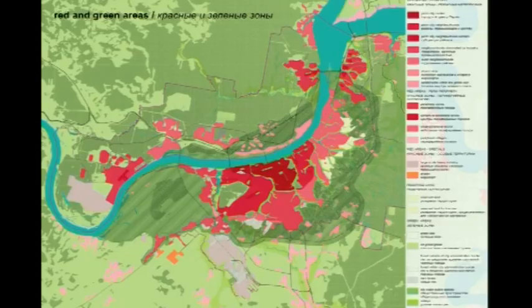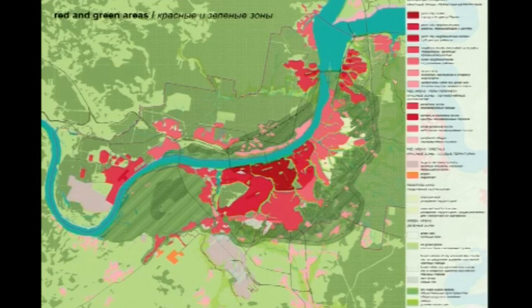What we developed is this kind of map where the darkest red areas are really the central zones where they should be densified. The lighter it gets, the more suburban. With the purple, pink, and rose areas you see developments — this kind of sprawl that already happened. There we said they have to stay as a certain village character, but not start focusing the sprawl further.